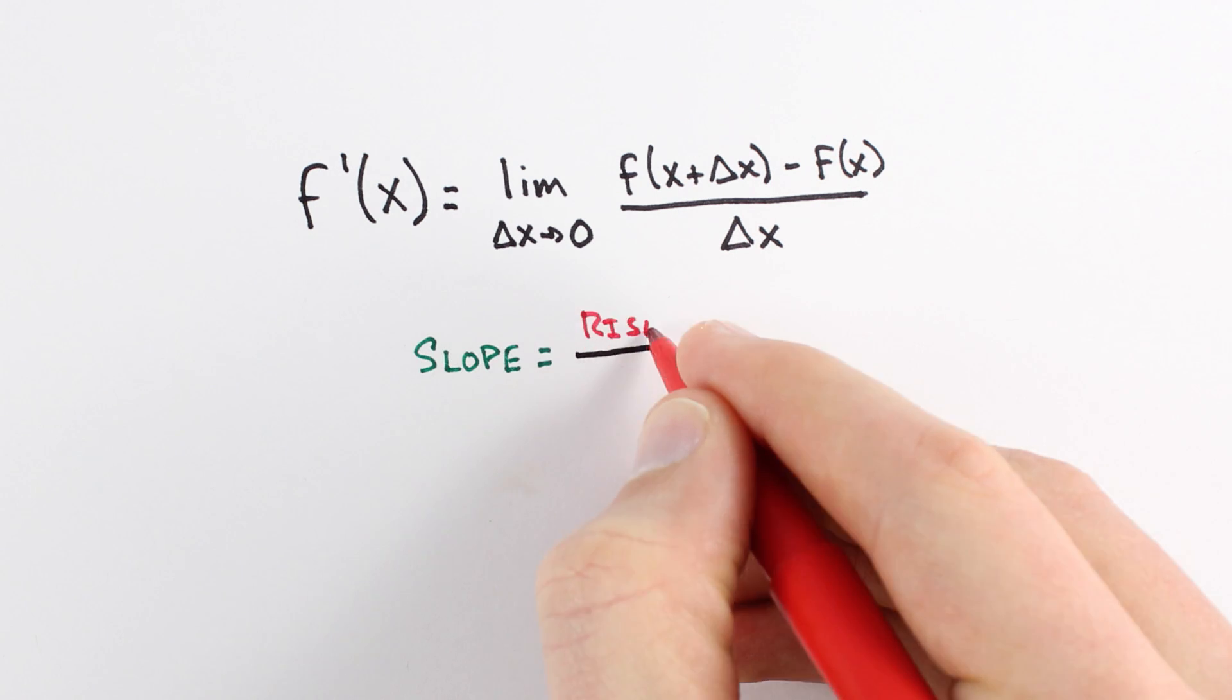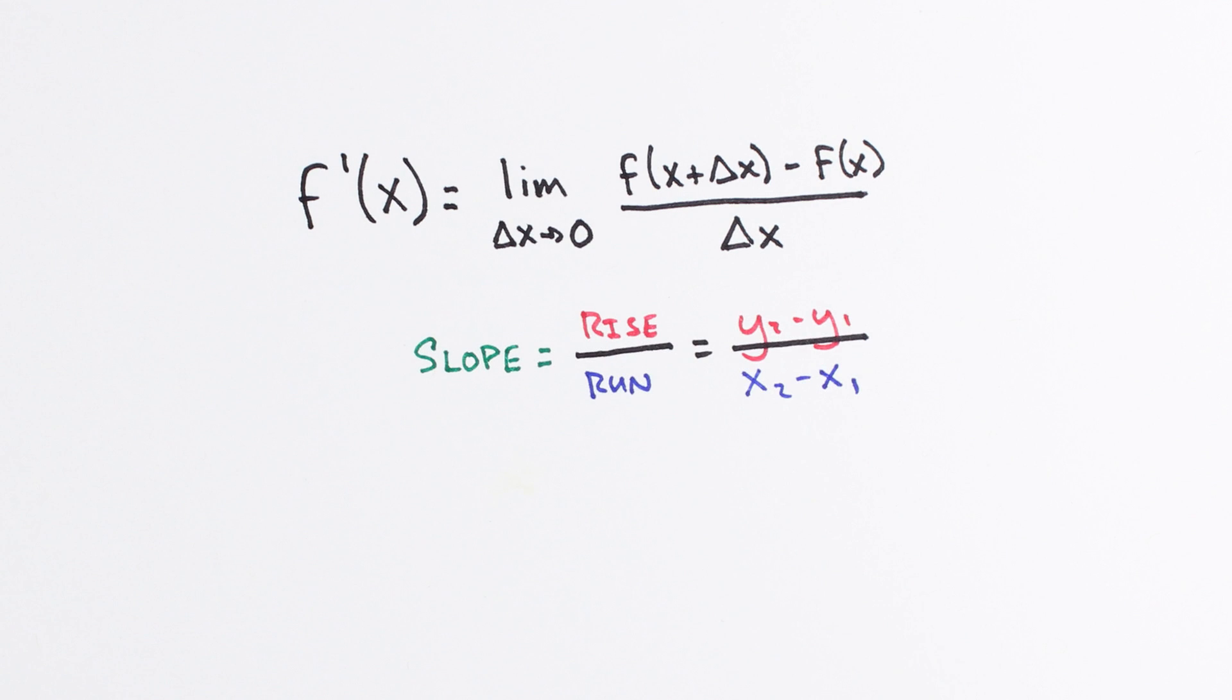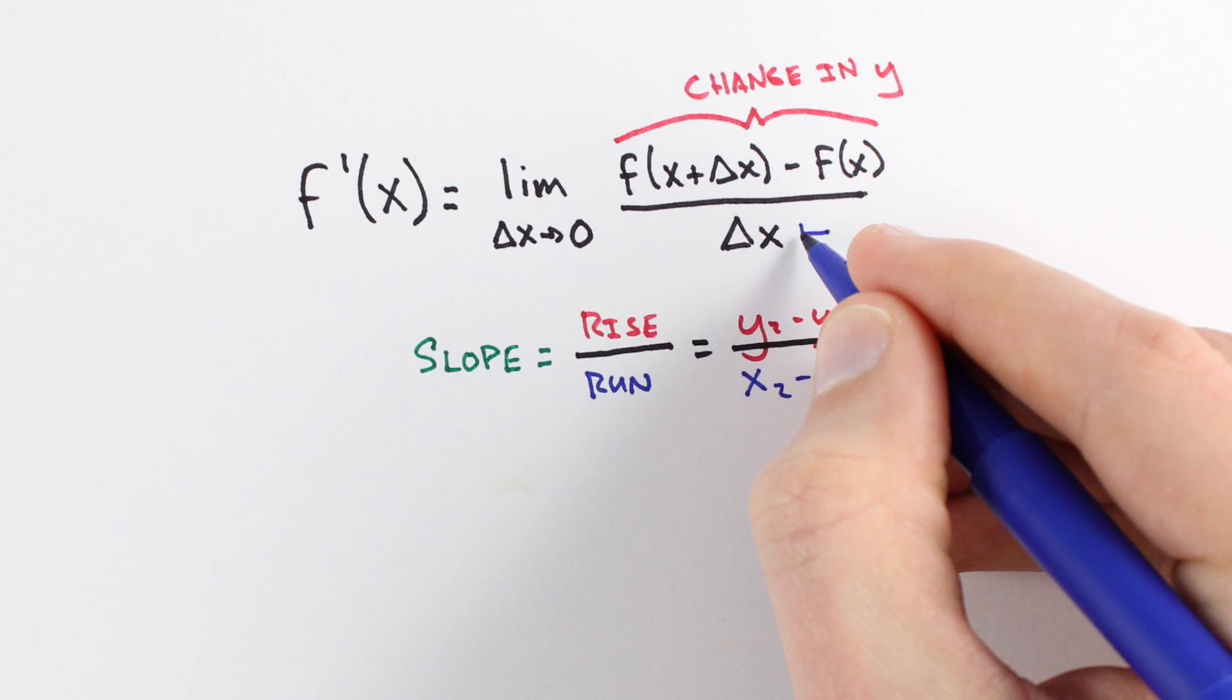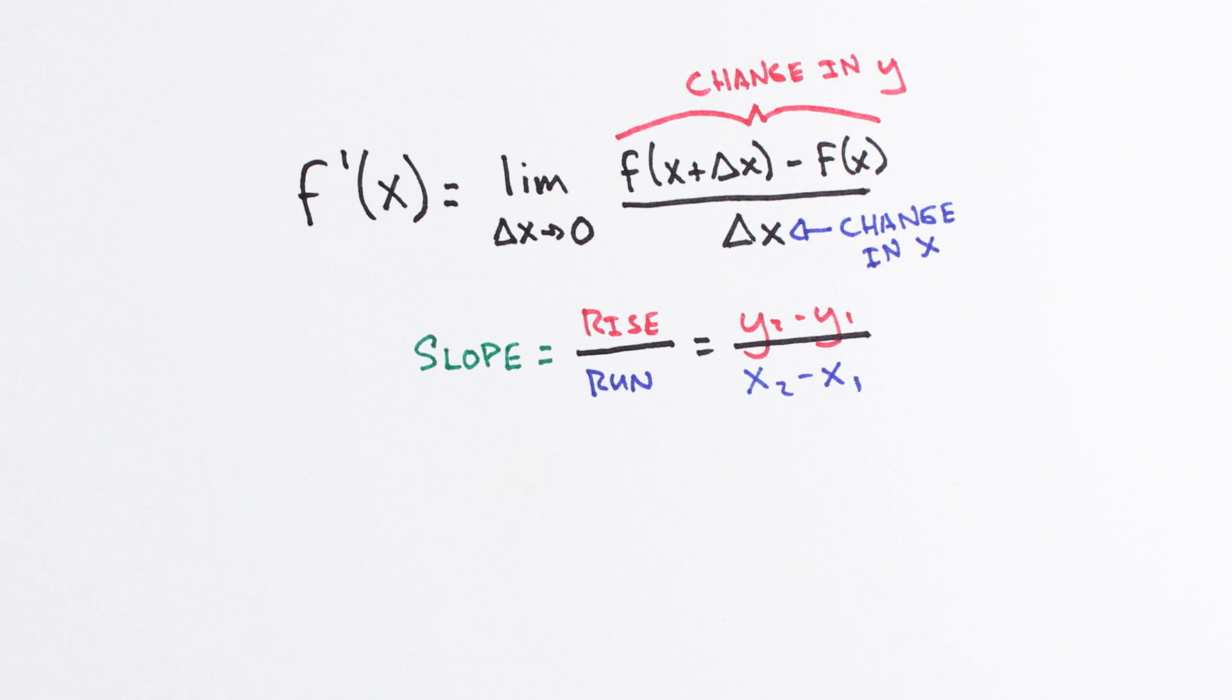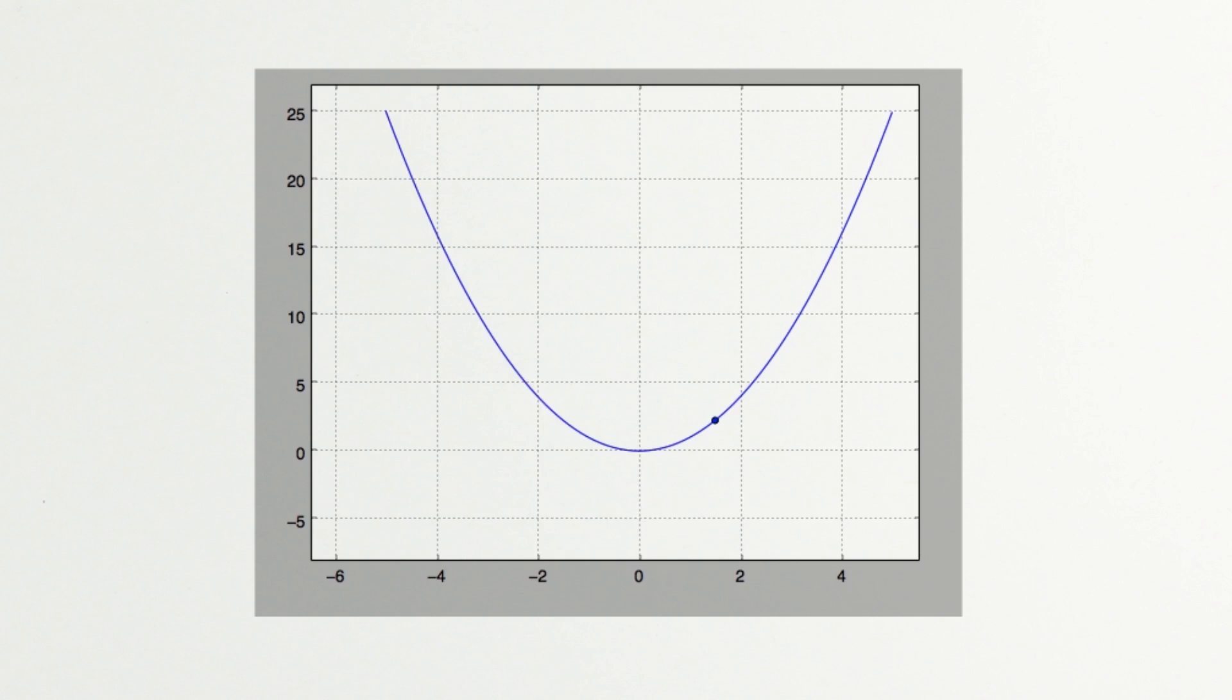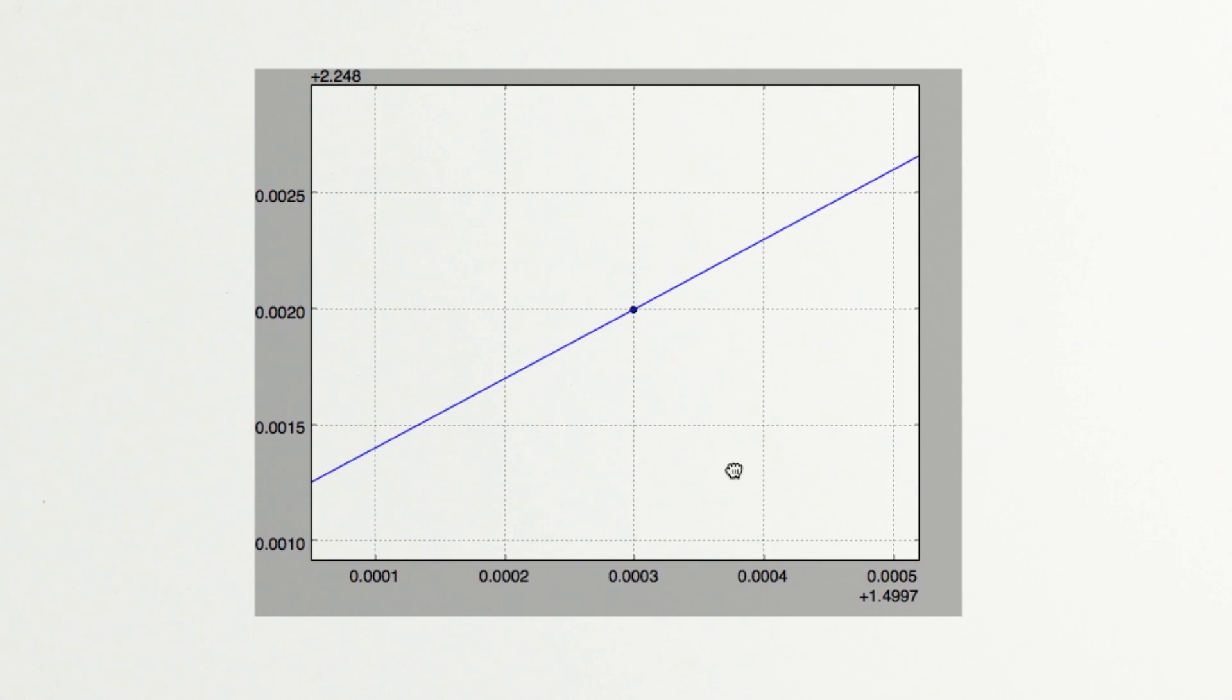The definition of the derivative is really a glorified slope formula. The numerator gives us the change in y values, while the denominator is a convenient way to express the change in x values. By including the limit, we are applying the slope formula across an infinitely small region. It's like zooming in on our function until it becomes linear.